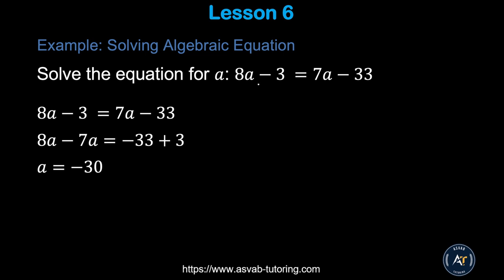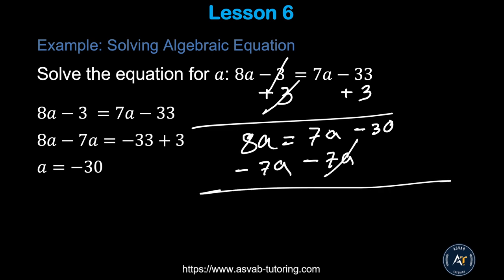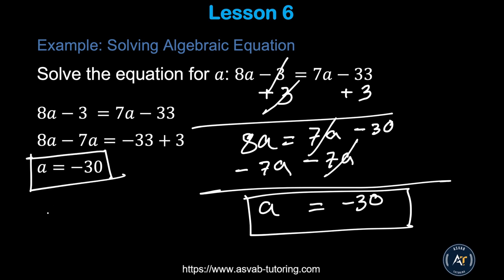Now let's learn how to solve different types of algebraic equations. For 8a − 3 = 7a − 33: the goal is to get variables on one side and constants on the other. Add 3 to both sides — the 3s cancel — giving 8a = 7a − 30. Then subtract 7a from both sides: a = −30.